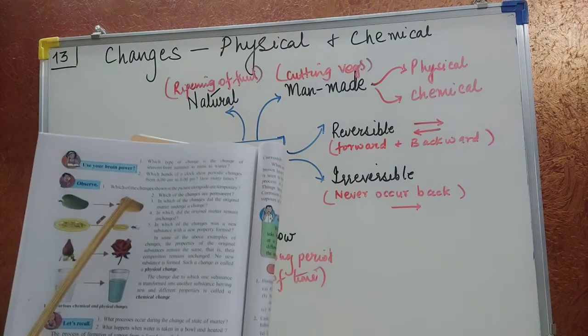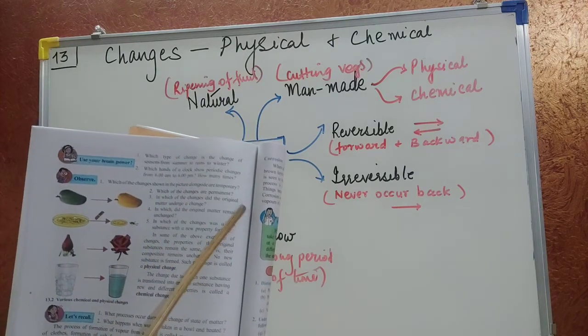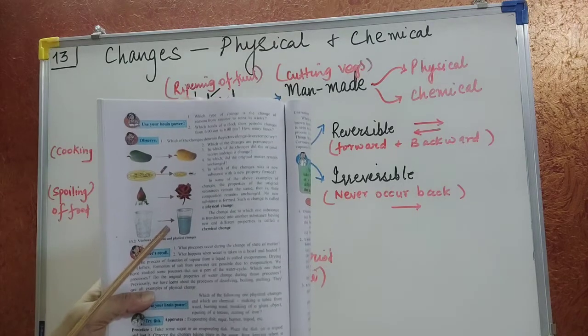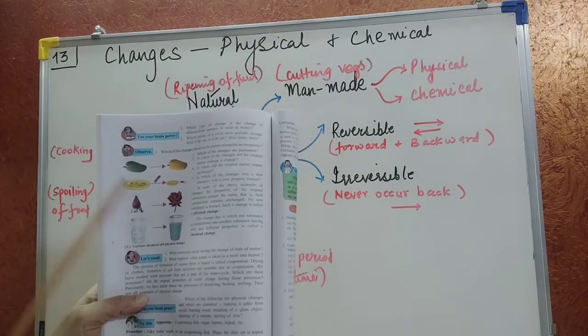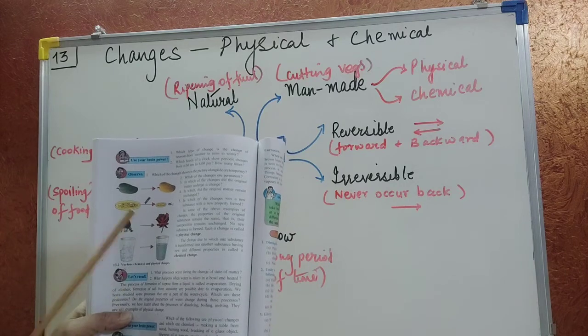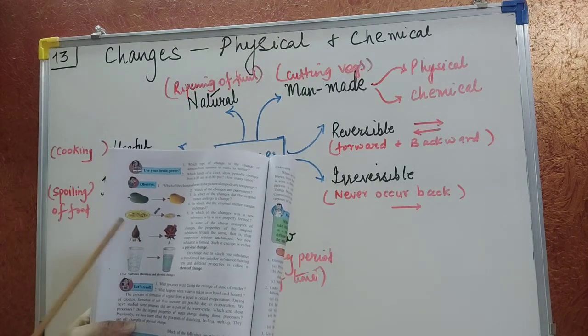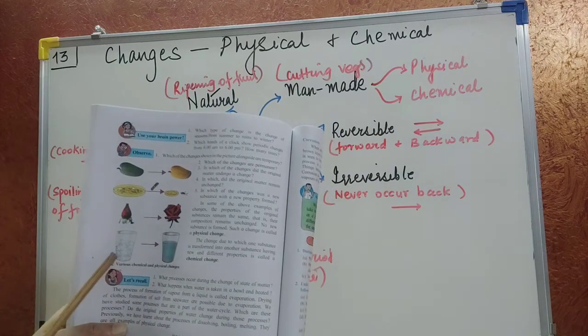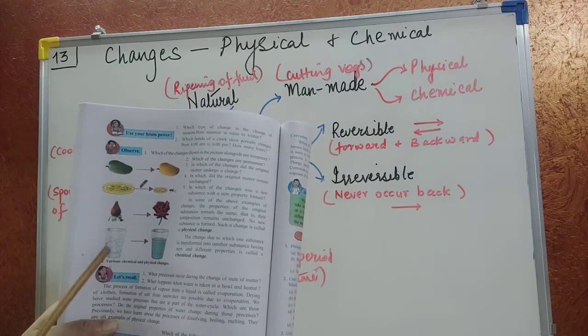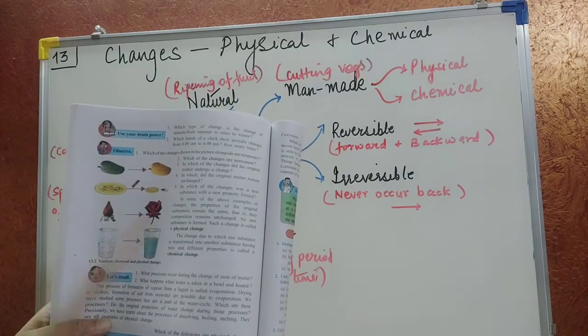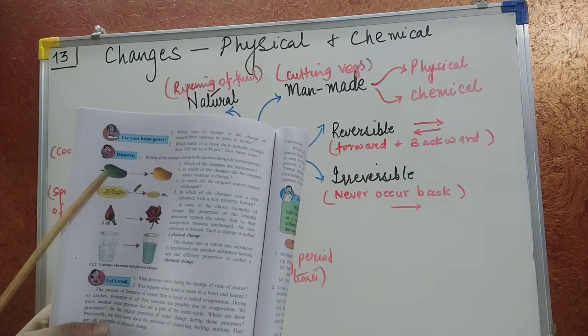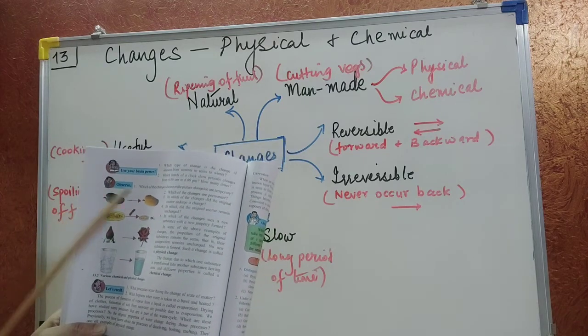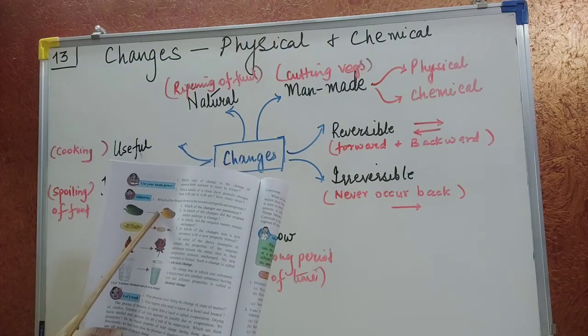Which of the following changes shown in the picture alongside are temporary or permanent? I want you all to do this both as an activity. In my live class I will be asking you all to tell me whether it is a temporary change or a permanent change. I can give you now this is a temporary change. Ice is forming water. Water can form ice. So temporary change.